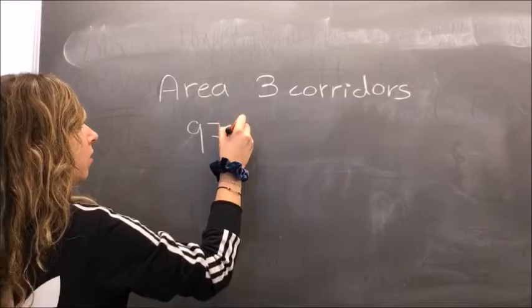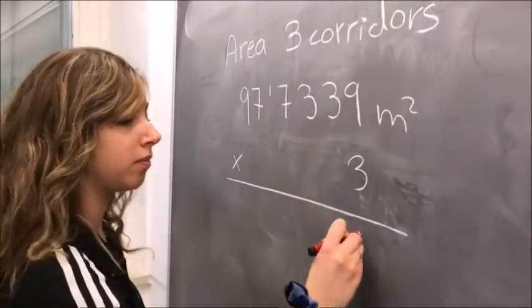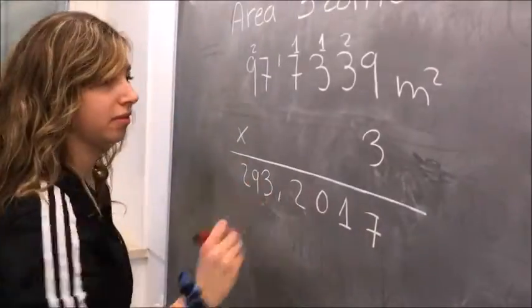As in our faculty there are 3 corridors, we will have to multiply by 3 the square meters we have.